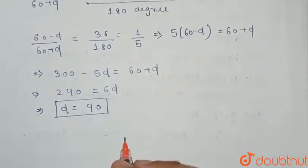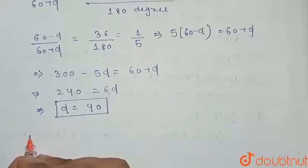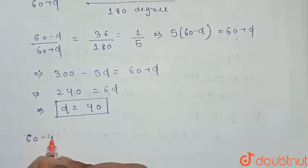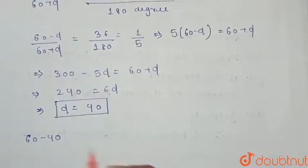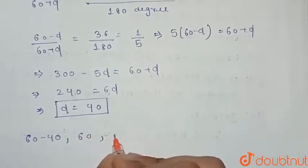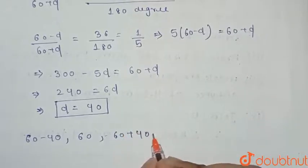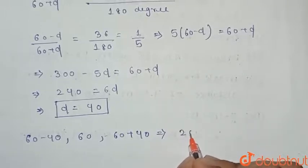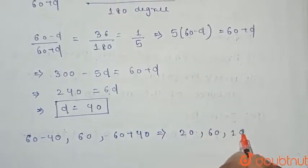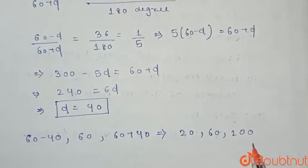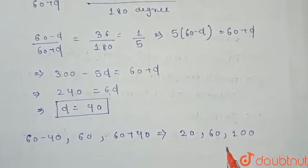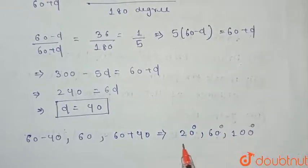Now we find all the angles. The first angle is a-d = 60-40 = 20°. The second angle is a = 60°. The third angle is a+d = 60+40 = 100°. So the angles are 20°, 60°, and 100°, where the smallest is 20° and the largest is 100°.